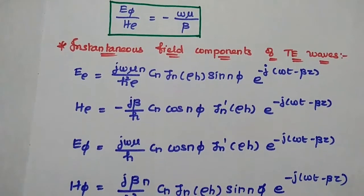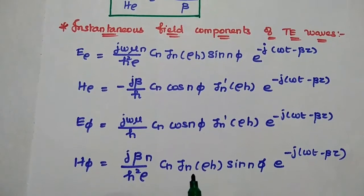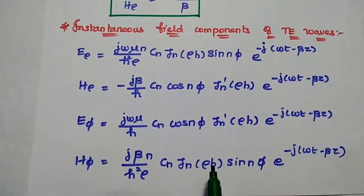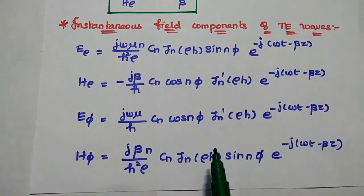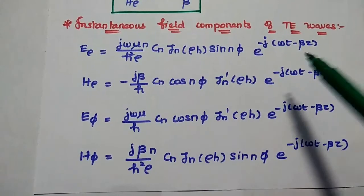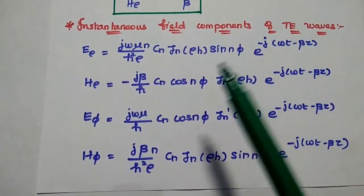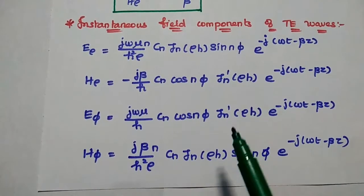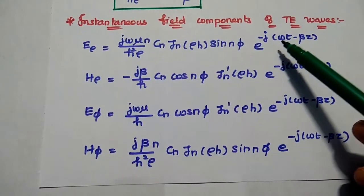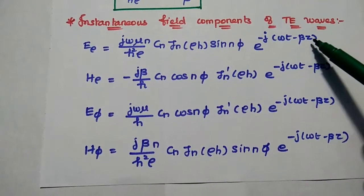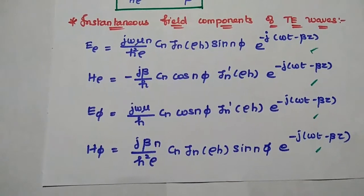Finally we can express the field components of TE waves in circular waveguide in terms of instantaneous values. Instantaneous means we consider the time variation. The field components can be multiplied with the exponential value e^(minus j*(omega*t minus beta*z)). These are all the instantaneous field components of TE waves.